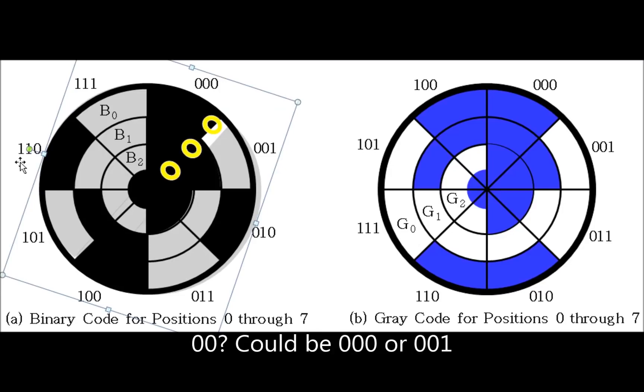that first bit could be either a 0 or a 1 when it's on the threshold. There is going to be a point at which enough light gets through that it's ambiguous as to whether it's a high or a low. Now in this case, because it can either be 000 or 001, it's not really a problem. It means that the angle could only be out by a small fraction.